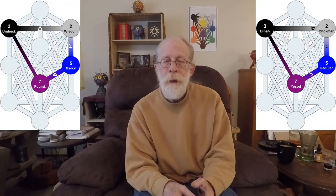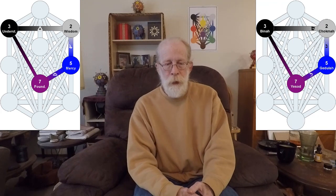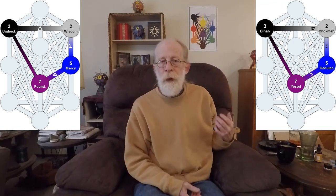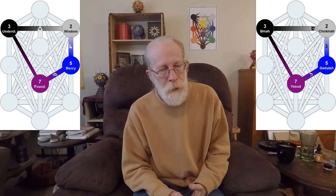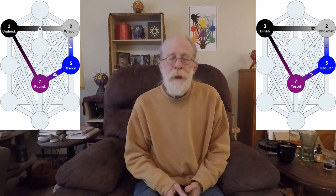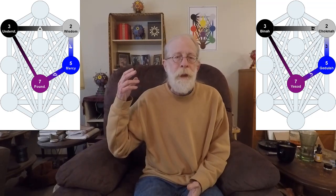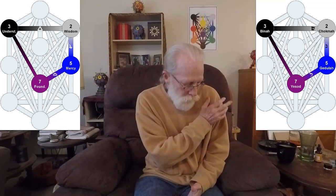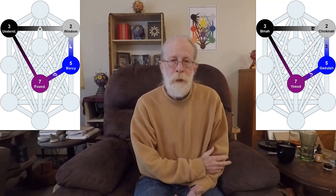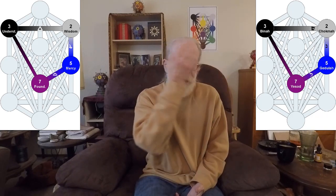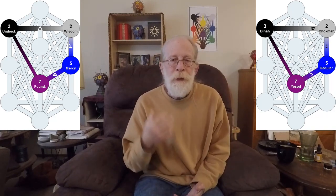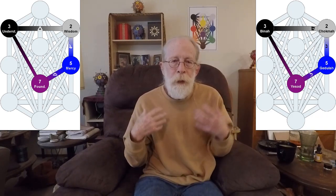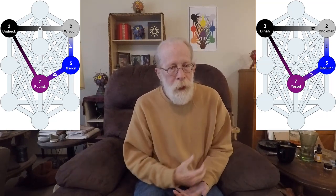The first one is a quadrangle. It goes from Gedula to Yesad, then Yesad straight up to Binah, then Binah over to Chokmah, and Chokmah down to Gedula. This one integrates Binah and Chokmah into Lamed.